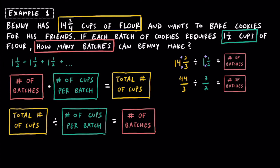Going ahead and doing so, we keep 44 over 3 and multiply by the reciprocal of three halves, which is two over three. At this point we should look to cross-cancel, but I don't think we can in this particular problem. Multiplying straight across: 44 times 2 equals 88, and on the bottom 3 times 3 equals 9. Turning this into a mixed number: 9 goes into 88 nine times since 9 times 9 is 81, with 7 left over. So that's 9 and 7 ninths batches.